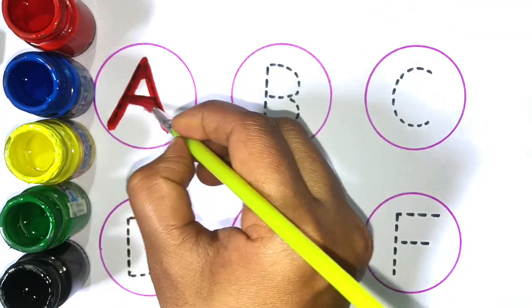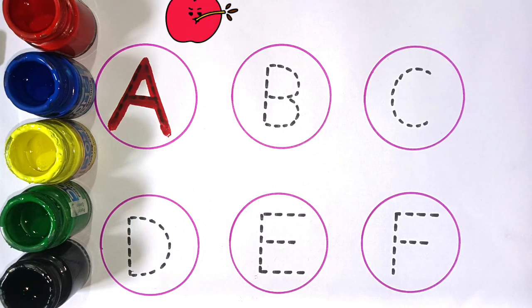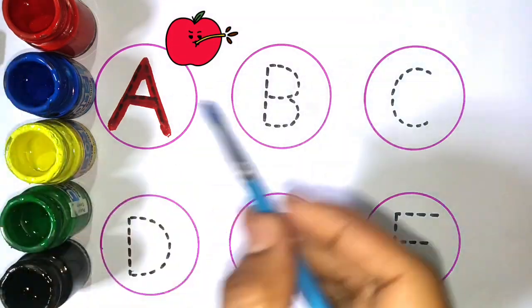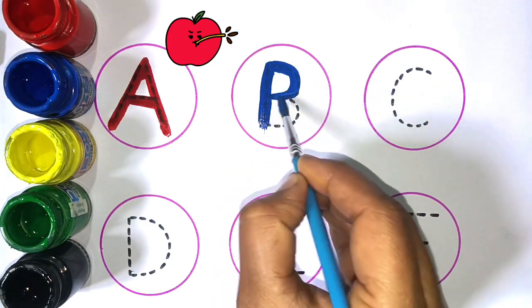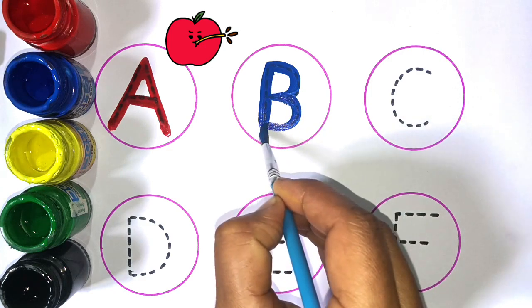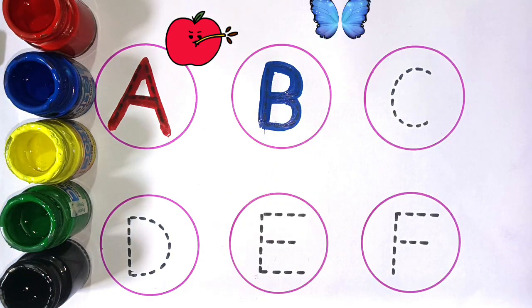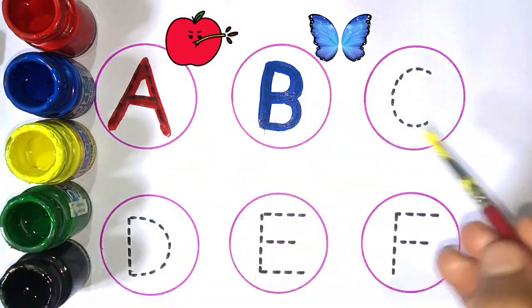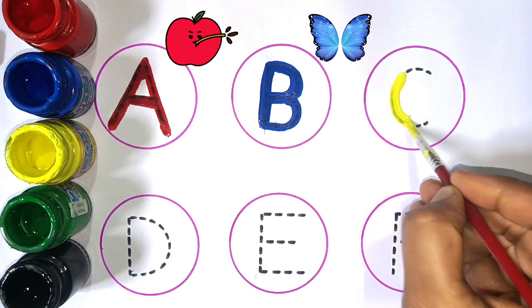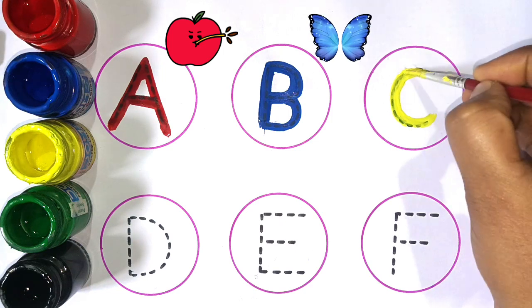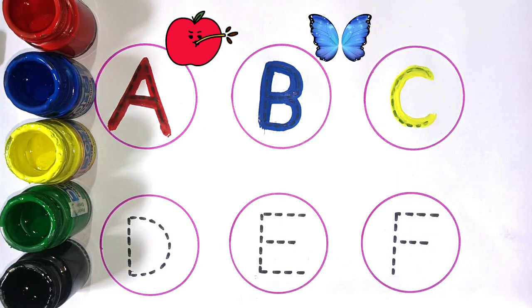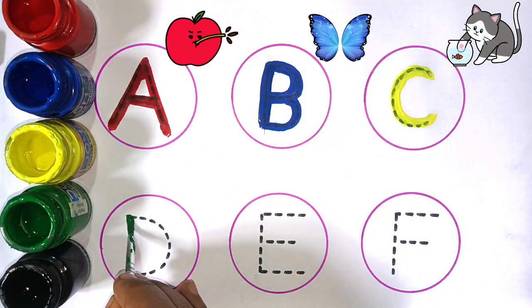A for apple, next to blue color. B for butterfly. Yellow color. C for cat, next to green color.